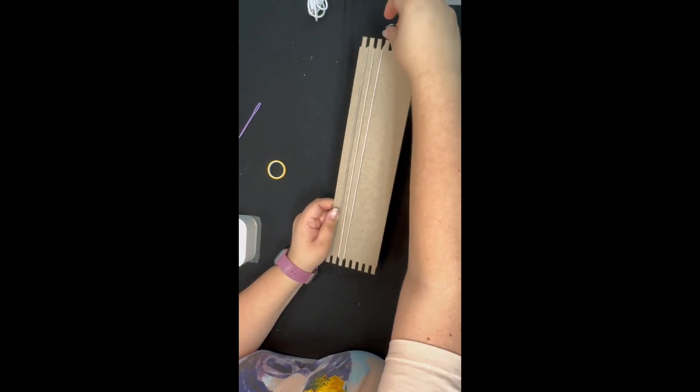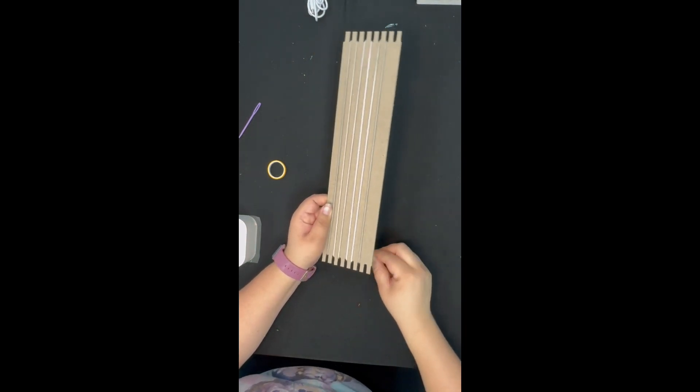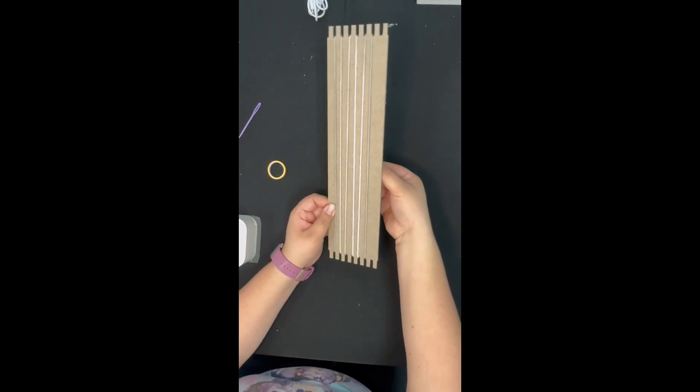You'll only be weaving this through on one side of the loom. Make sure that you're not just wrapping it around—oftentimes people make that mistake.